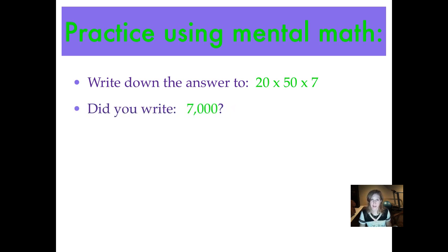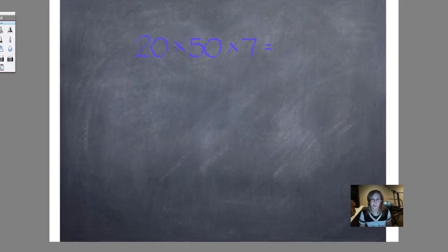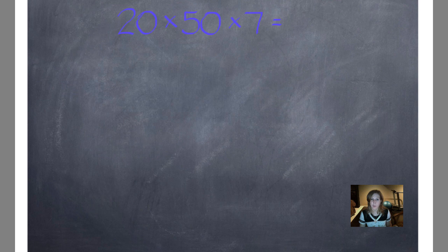Did you write 7,000? Let's see how we did that. There are different ways that I could solve this problem. I'm going to use the way that's easiest for me, but maybe there's a different way that's easier for you. You should use the properties that make it easiest for you.